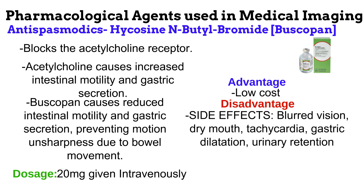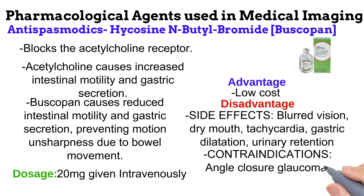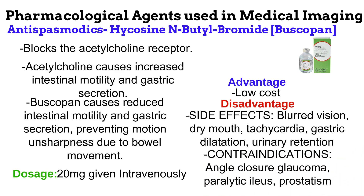Because of these side effects, Buscopan should not be used on patients with angle-closure glaucoma — a rare type of glaucoma in which the drainage system of the eye is obstructed, causing a buildup of pressure within the eye. Buscopan would only make this worse. Also, patients with paralytic ileus should not use Buscopan, as there is already little or no bowel movement and Buscopan would worsen the condition. It is also contraindicated in prostatism, as patients with prostatism suffer urinary retention, which is also one of the side effects of Buscopan.